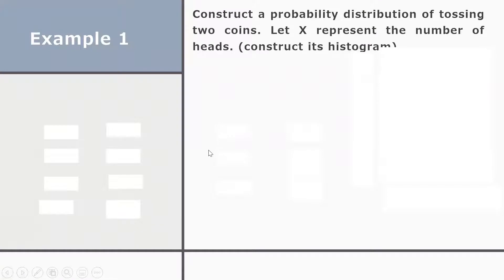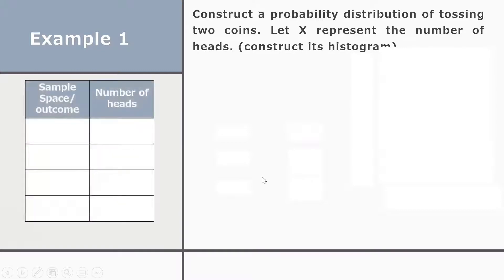Example 1: Construct a probability distribution for tossing two coins, where x represents the number of heads, and construct its histogram. First, we find the sample space — the possible outcomes in tossing two coins. The outcomes are: head-head (two heads), head-tail (one head), tail-head (one head), and tail-tail (zero heads).